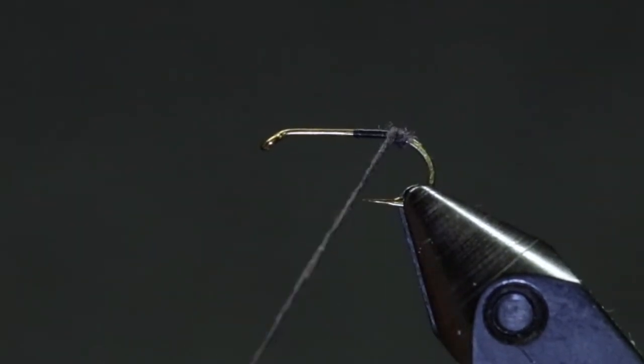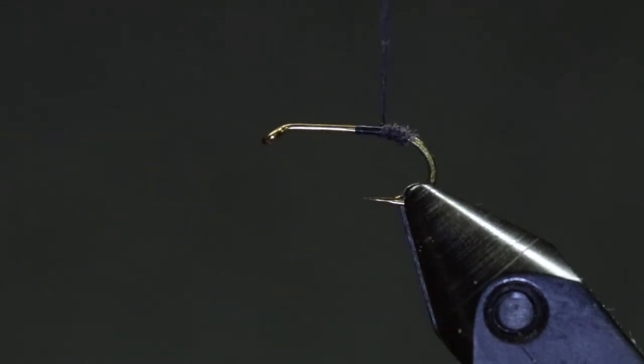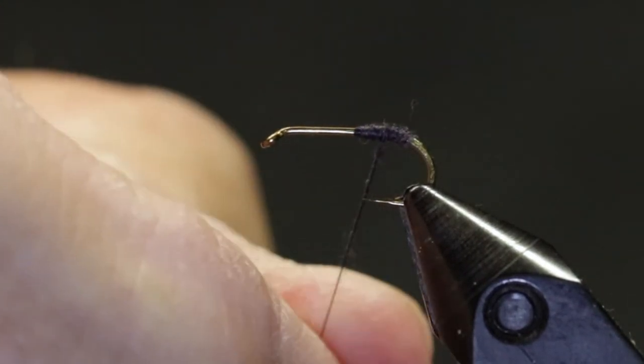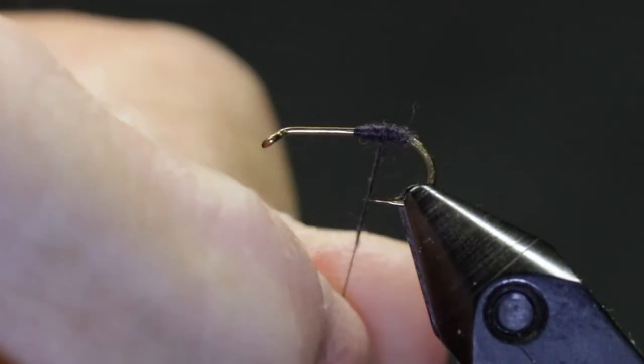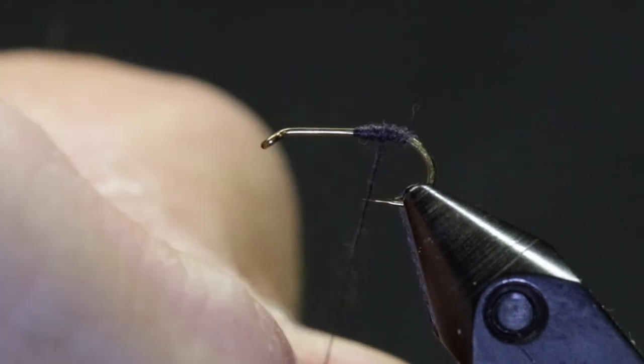Wrap back to the tie-in point, ending not quite as close to the tie-in point. Doing this will create a tapered segment. It usually takes more than one application of dubbing to complete the segment. Better to build up a gradual segment rather than using too much dubbing at once.